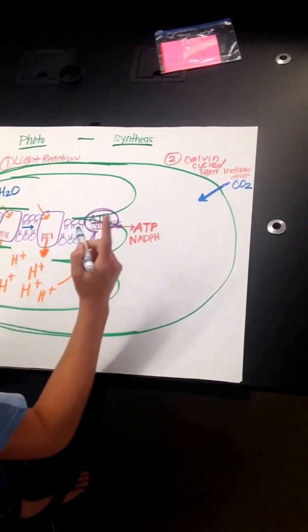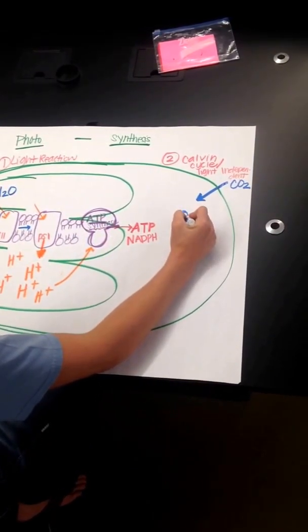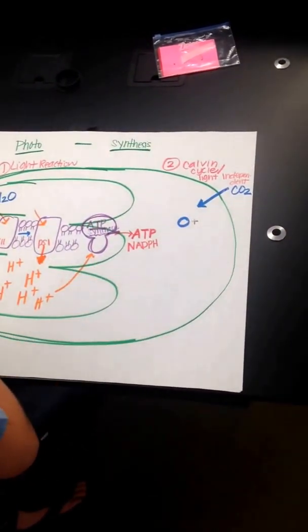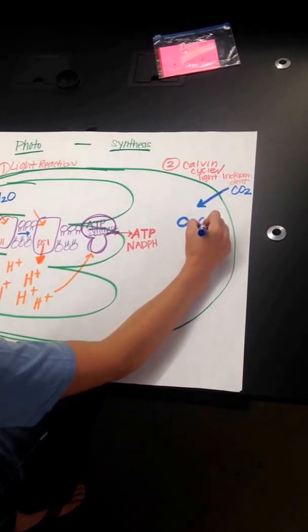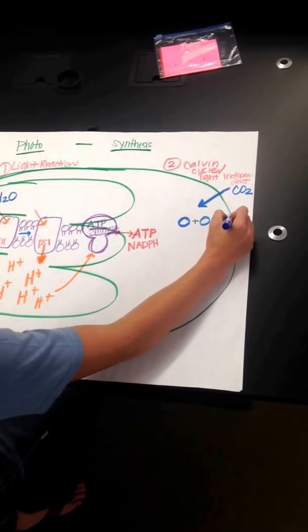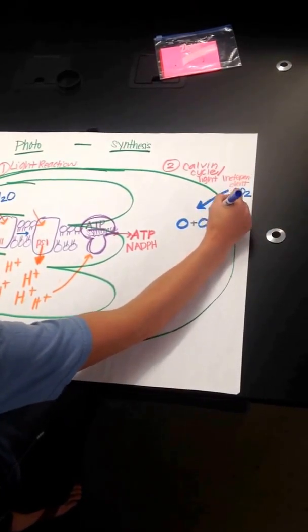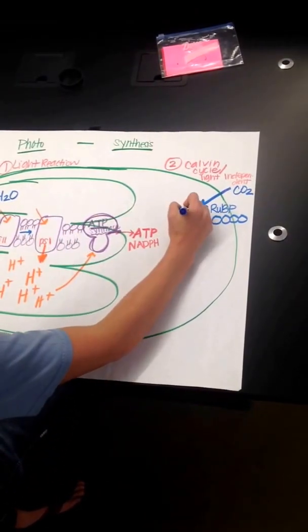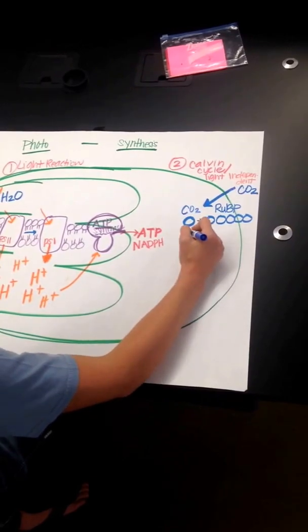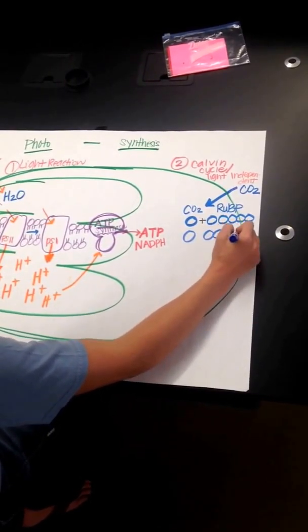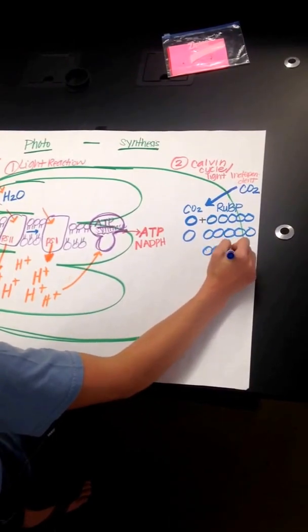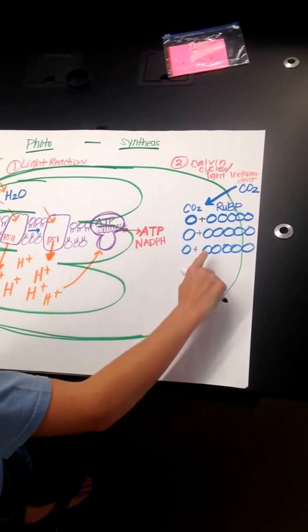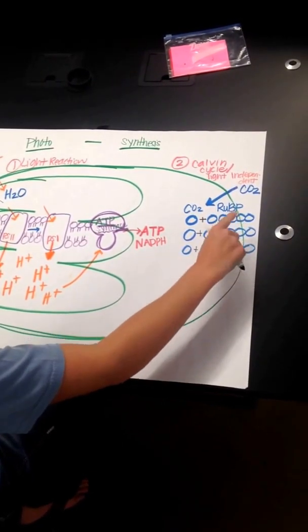And that CO2 is going to bind with a five-carbon molecule. So I'm still drawing carbon. It's five of them. One, two, three, four, five. And this five-carbon molecule is called RuBP. It's already in the stroma. So CO2 binds with RuBP, and it actually does it three times. So here we have three CO2 molecules, and they've binded with five carbon molecules called RuBP.